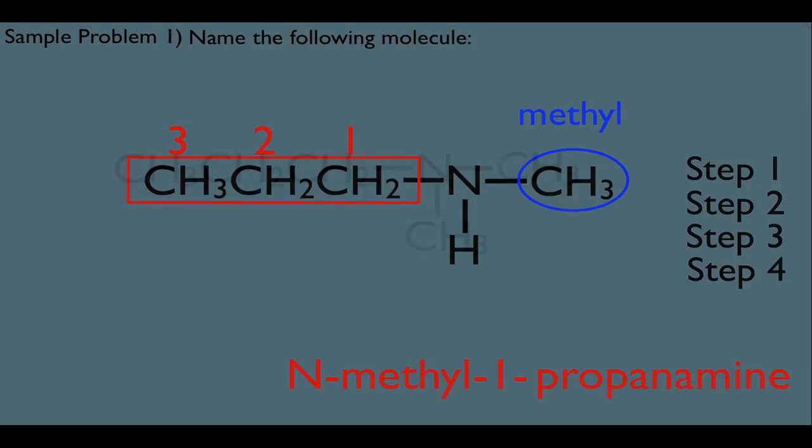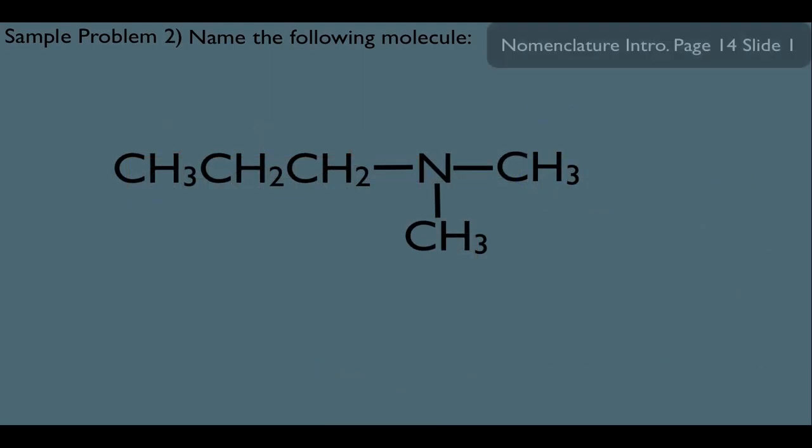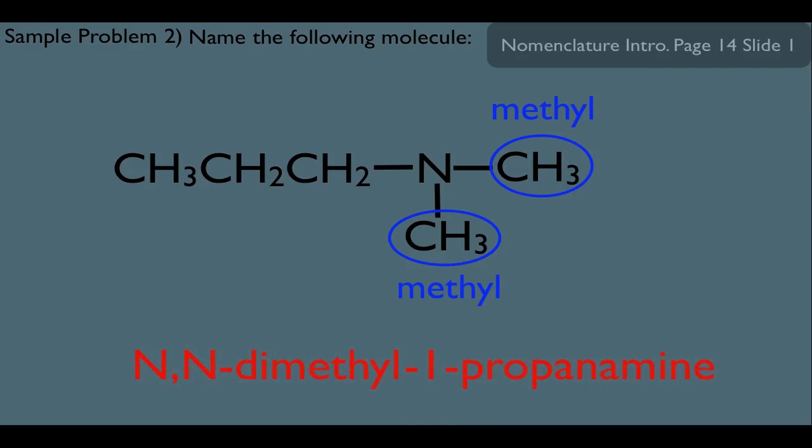Now, just to make sure you got this, let's change up this example a little bit. Let's put two methyls here on the nitrogen instead of one. How would that change things? Well, just use the system here. We would call this molecule N,N-dimethyl-1-propanamine.